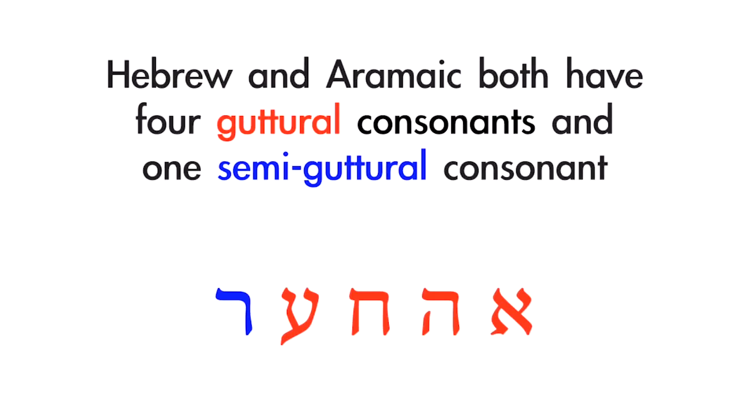Another feature that both Hebrew and Aramaic share is the guttural consonant system. Both have four guttural consonants and one semi-guttural consonant. The four guttural consonants, shown in red, are Aleph, He, Chet, and Ayin. The one semi-guttural consonant, in blue, is Resh. The Resh is a semi-guttural because sometimes it acts like a guttural consonant and sometimes it does not — for example, you can't put a dagesh forte in the Resh, but you can put a vocal schwa underneath it at times.